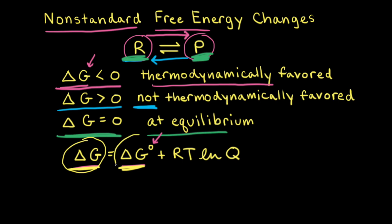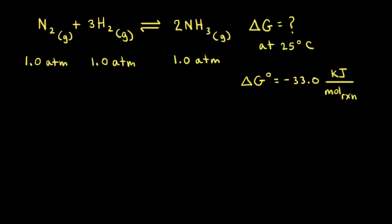Delta G naught is a different situation. Delta G naught is a constant at a certain temperature, because it's referring to the difference in free energy between reactants and products in their standard states, so this value will remain the same as the net reaction moves to the left or to the right. To calculate the non-standard change in free energy, delta G equals the standard change in free energy delta G naught plus RT times the natural log of Q, where R is the ideal gas constant, T is the temperature in Kelvin, and Q is the reaction quotient.